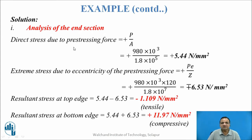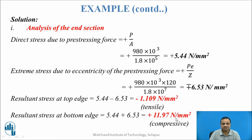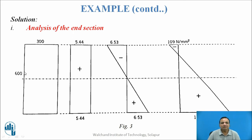Analysis of the end section: Direct stress is P/A. At the end section, due to eccentricity, there is a stress P·E/Z — negative at top (tension) and positive at bottom (compression), since the tendon is below the neutral axis. The resultant top stress is minus 1.109 N/mm². The resultant bottom stress is 5.44 plus 6.53, that is 11.97 N/mm². The diagram shows P/A acting uniformly, P·E/Z giving compression at bottom and tension at top, and the net stress due to pre-stressing force and eccentricity.